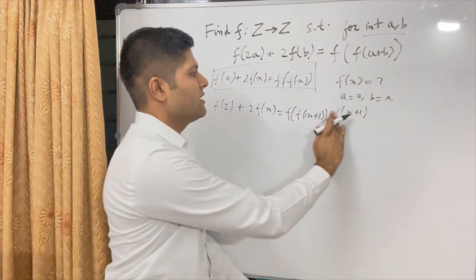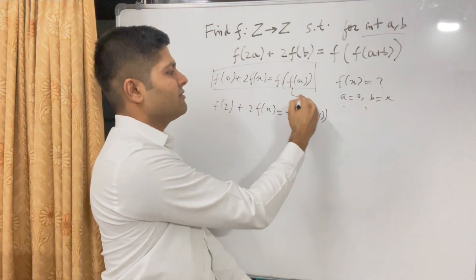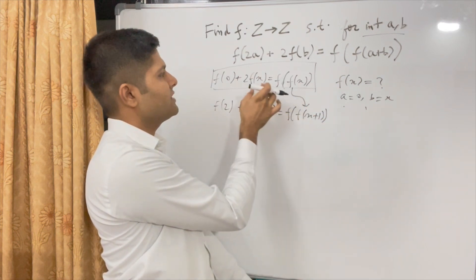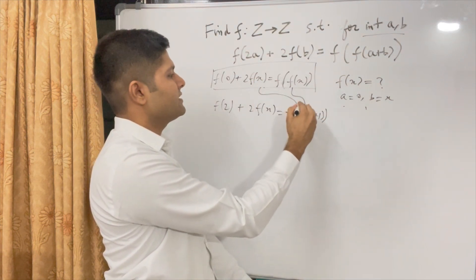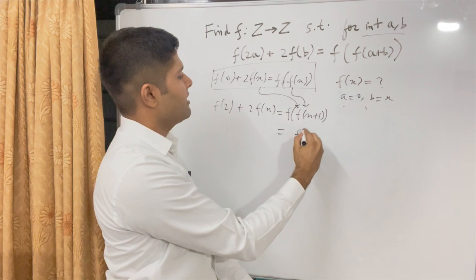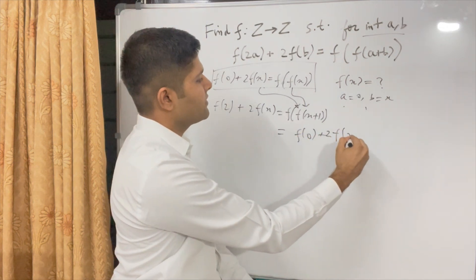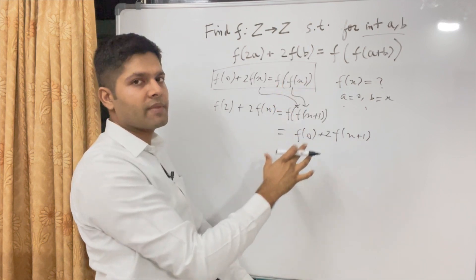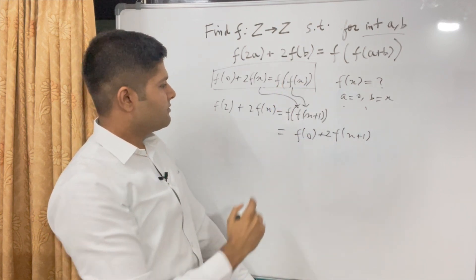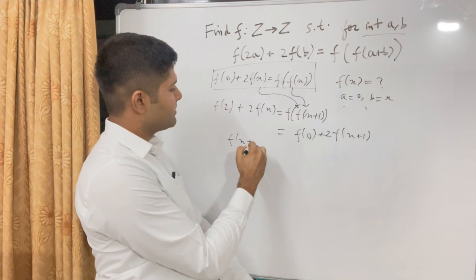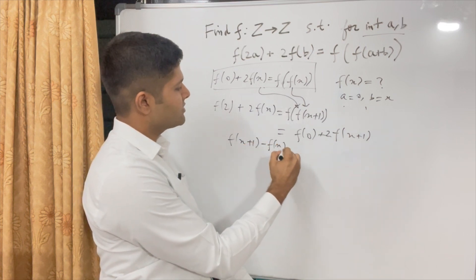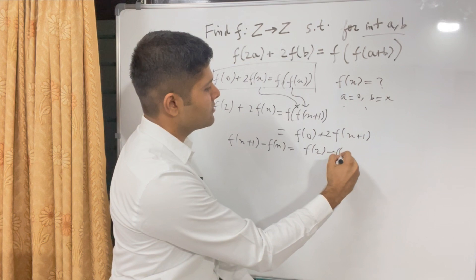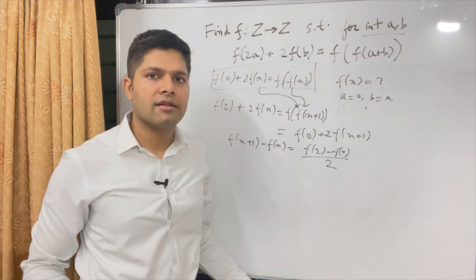So now we know this equation. So we just put it here. What is f(f(x+1))? We just plug in x+1 into this side. So if we insert it here, this is nothing but f(0) + 2f(x+1). I just expanded this using the value x+1. So we obtain that f(x+1) - f(x) + 2 = (f(2) - f(0))/2.